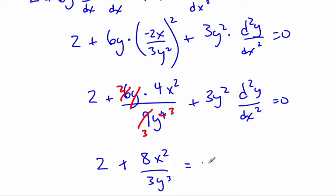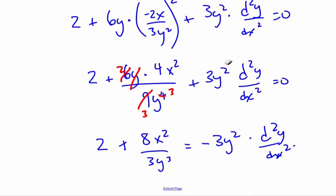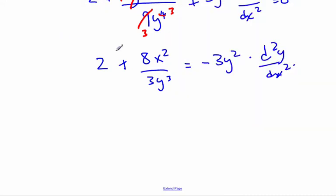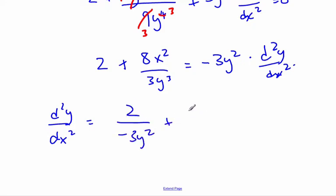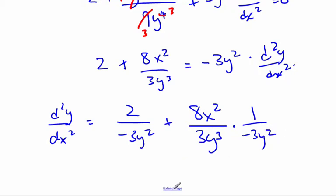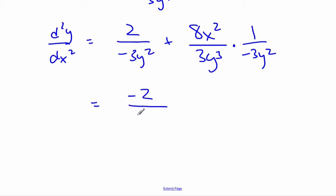Subtracting over, we get 2 plus 8x squared over 3y cubed equals negative 3y squared times the second derivative. Dividing through, the second derivative equals (2 over negative 3y squared plus 8x squared over 3y cubed) times 1 over negative 3y squared, which simplifies to negative 2 over 3y squared minus 8x squared over 9y to the 5th.